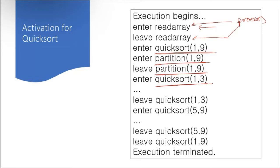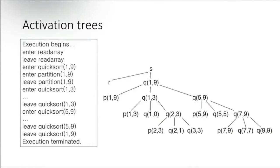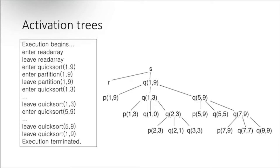After partition returns, quicksort terminates, then enters quicksort again, performs the sort on that partition, then leaves quicksort — and this happens again for each partition. Quicksort calls itself recursively for each partition. Finally, when all partitions are sorted, execution terminates. This is how the activation tree for quicksort works.